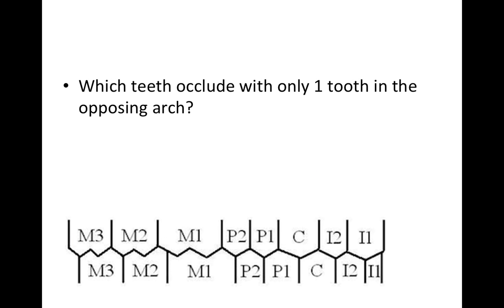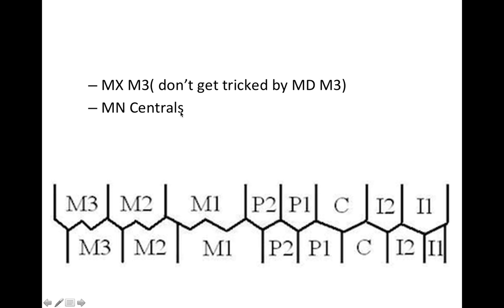Here's a question: which teeth occlude with only one tooth in the opposing arch? Pause and think about it. The answer is the maxillary third molar — it's only occluding with one opposing tooth — and the mandibular centrals, which are also only occluding with one other tooth. Be careful on the exam because one option will be the mandibular third molar, but that tooth is actually occluding with two teeth on the upper, so don't get tricked.